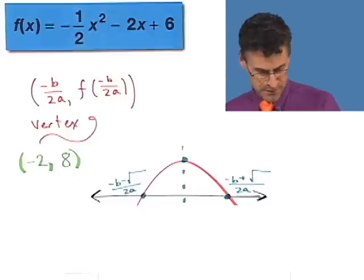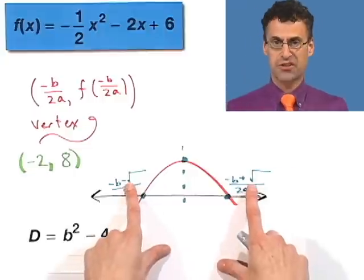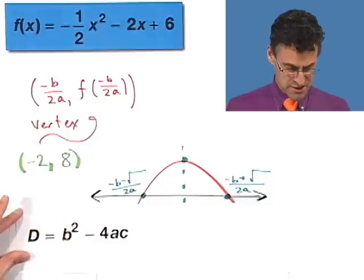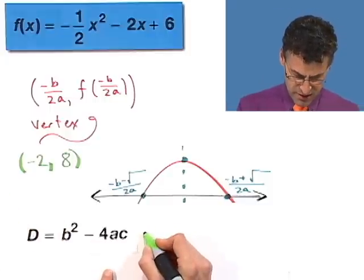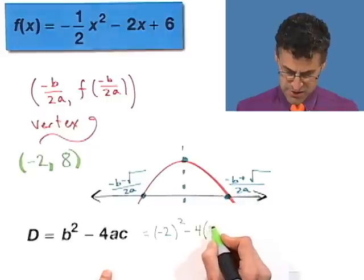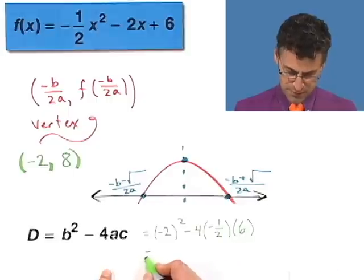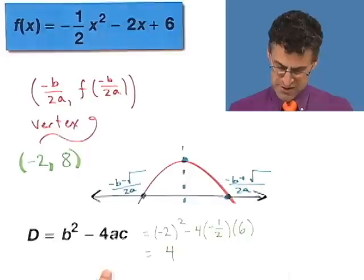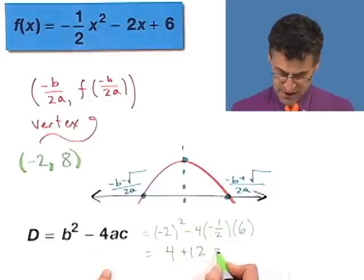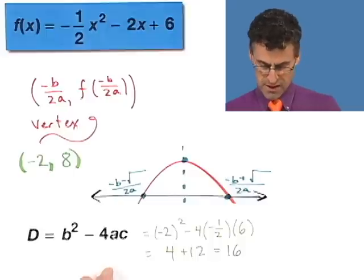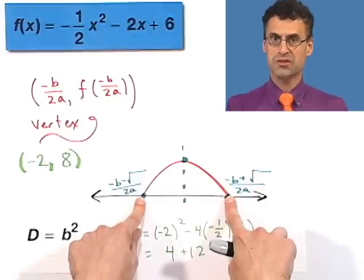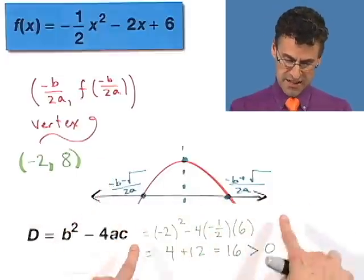That stuff in the proof is just the discriminant, d — it's b squared minus 4ac — and it gives us insights into how many roots there are going to be. In our case, d equals negative 2 squared minus 4 times negative one-half times 6. That's 4, and negative times negative is positive, 4 divided by 2 is 2, times 6 is 12, so it's 4 plus 12 which equals 16. Since the discriminant is greater than 0, we're going to have two real roots, meaning this parabola crosses the x-axis in two different places.